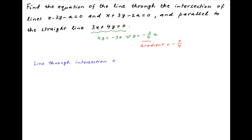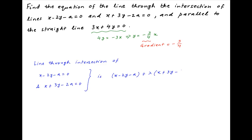Now, the equation of the line which passes through the point of intersection of the given lines x minus 2y minus a is equal to 0 and x plus 3y minus 2a is equal to 0 can be written as x minus 2y minus a plus lambda times x plus 3y minus 2a is equal to 0, where lambda is an arbitrary parameter. This can be written as 1 plus lambda times x plus 3 lambda minus 2 times y minus a plus 2 lambda a is equal to 0.